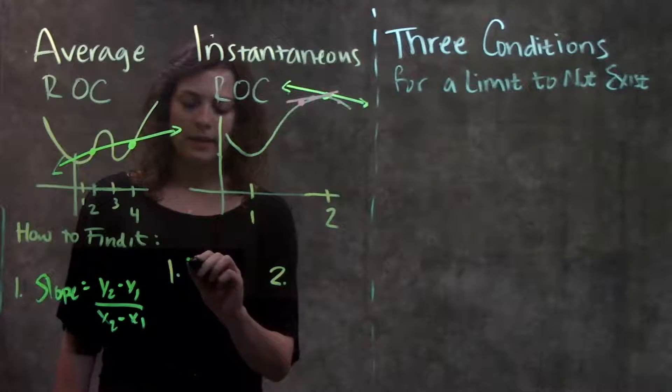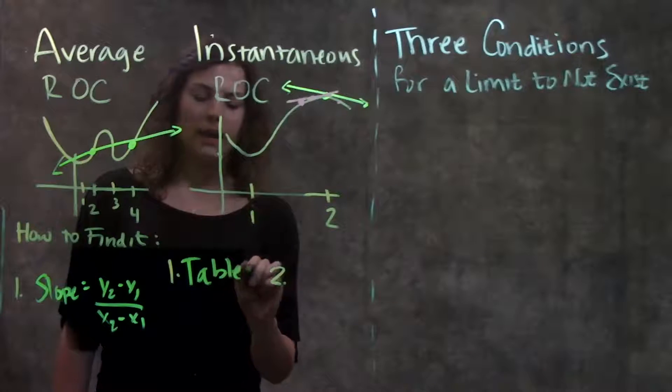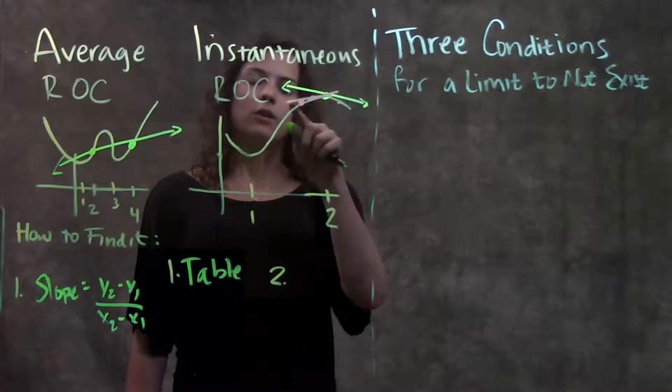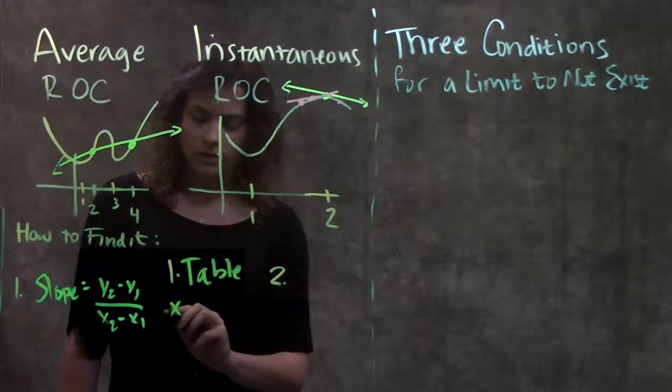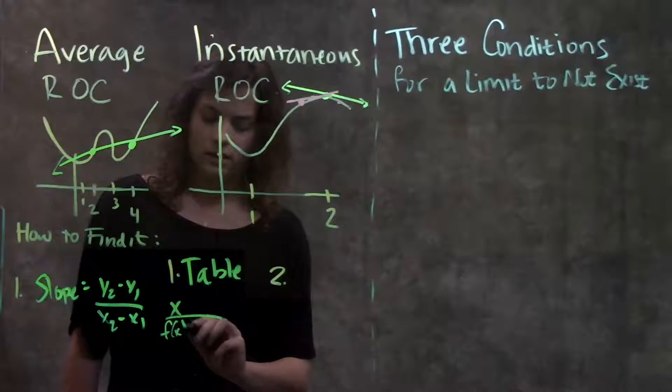Step one is make a table. We're going to plug in points closer and closer to the value we're actually interested in. So here's my x, here's my f of x.